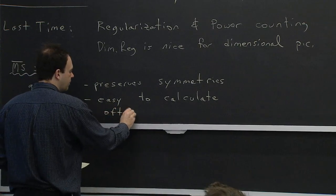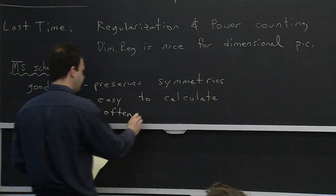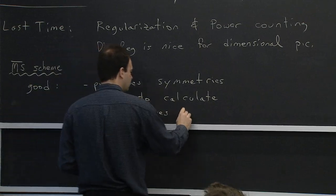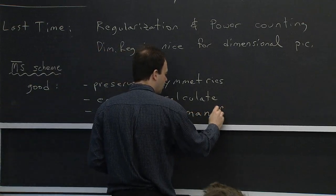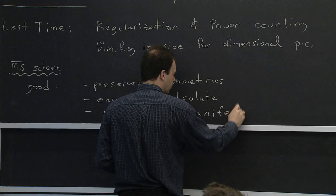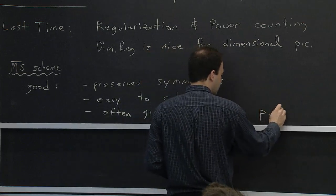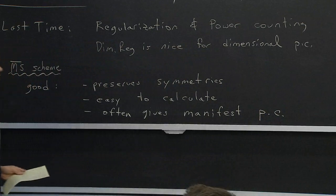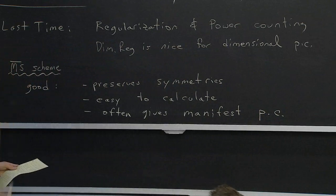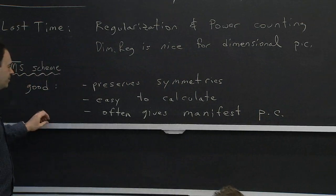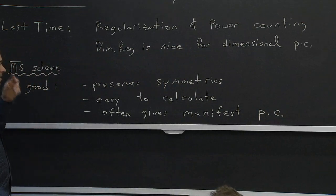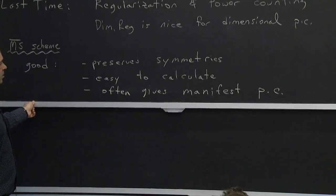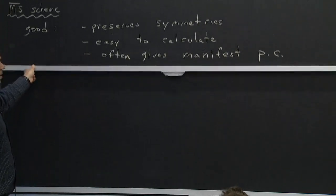In the context of effective field theory, MS-bar is nice because it often gives what I would call manifest power counting, where we can power count both the regulated diagrams and the renormalized diagrams. We don't have to worry about whether we've added the counter terms or not — we can just do power counting.